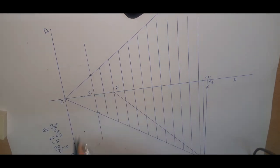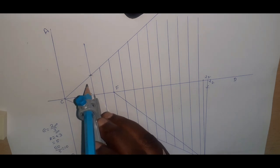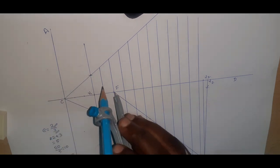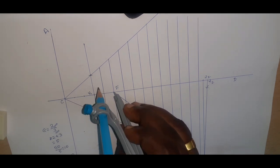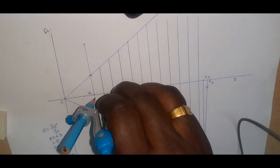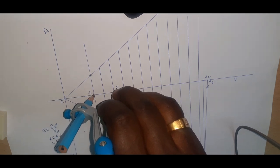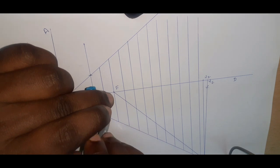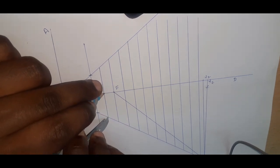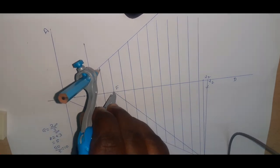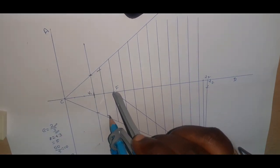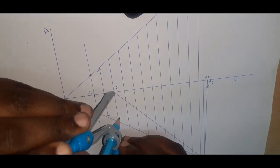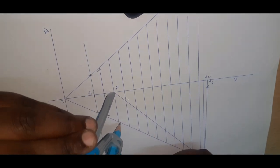Now take your compass. Which line you are going to take the measurement of is very important. First take the measurement of this line, with F as the centre — always F as the centre. Take that arc where it meets on the perpendicular line — this is the first point. Next, I take the measurement here; both will be the same. With F as the centre, one arc here and another arc here.